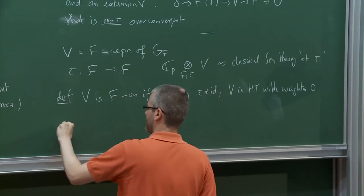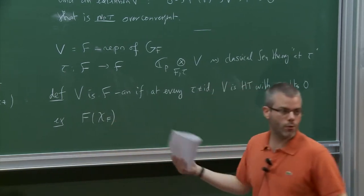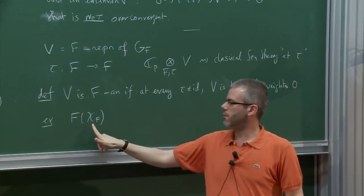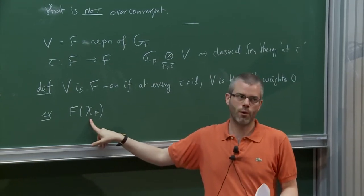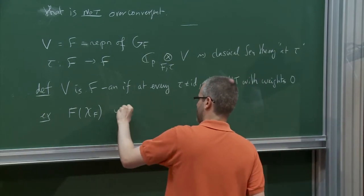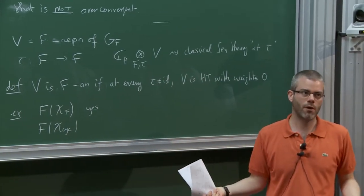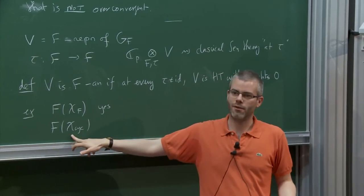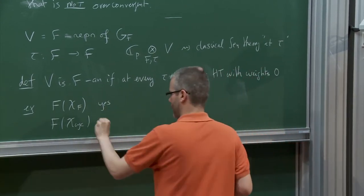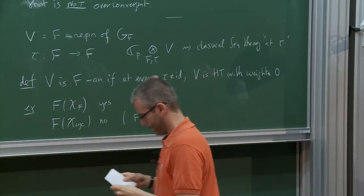For example, if you take F twisted by the Lubin-Tate character, this is an example of an F-analytic representation: at the identity embedding there is one weight equal to one, but at all the others the weights are equal to zero. But if you twist F by the cyclotomic character, then at all embeddings there is a weight equal to one, so this will not work if F ≠ Q_p. This is a rather restrictive condition.